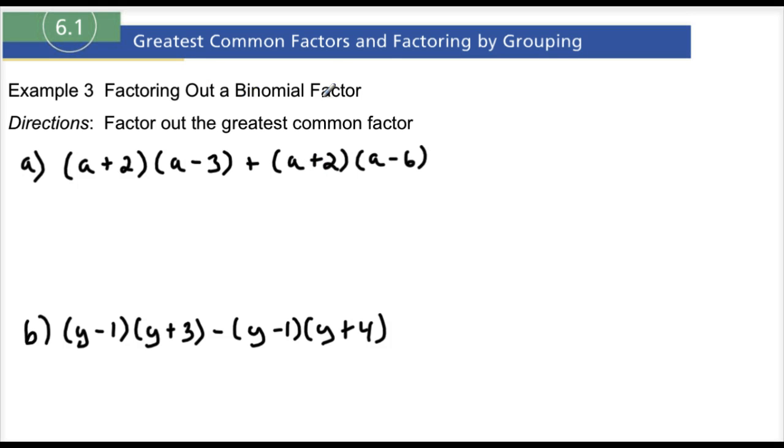Example number three, we're going to be factoring out a binomial factor. And we're going to be doing that by the means of factoring out the greatest common factor here. So let's look at example A.